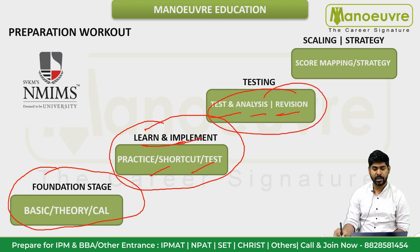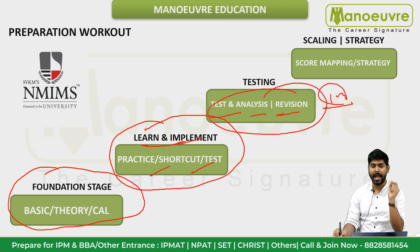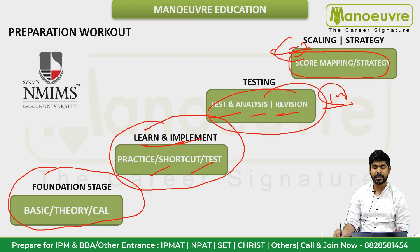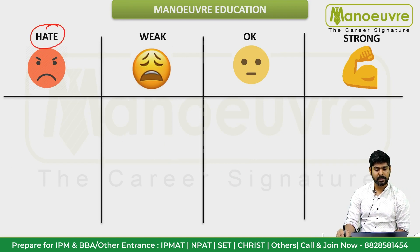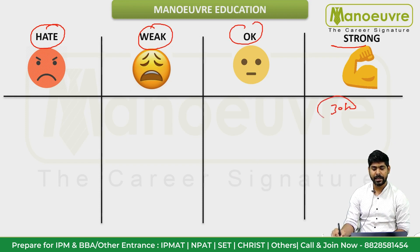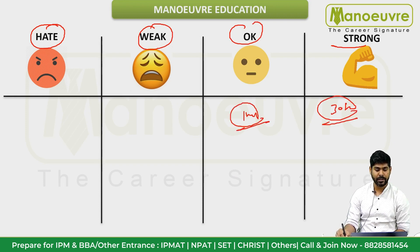Write all mock tests before the actual examination. Use a score mapping strategy with d-day planning, time management, and identifying strengths and weaknesses. After every mock test, analyze which topics you struggled with. Categorize topics: if you solve in 30 seconds, that's Strong; around 1 minute is Okay; 90 seconds means Weak. Focus your revision on weak topics based on this analysis.